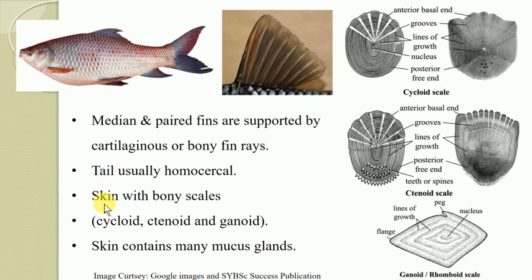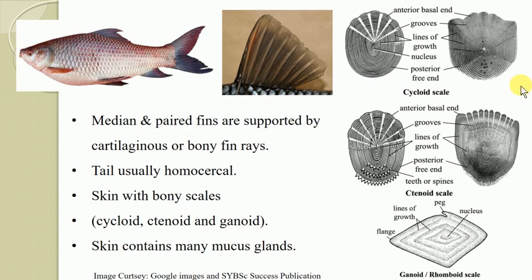The next characteristic feature: the skin has dermal bony scales which are mesodermal in origin. Three types of scales are recognized in Osteichthyes as exoskeletal parts: cycloid scales, ctenoid scales, and ganoid scales. Cycloid scales are somewhat circular in nature; ctenoid scales have tiny spines or ctenii at one edge; ganoid scales are rhomboid in shape. Either one of these kinds of scales is always present in bony fishes.